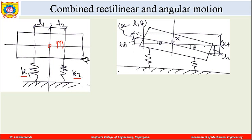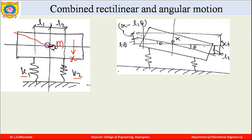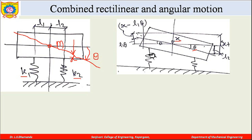When some force acts on the block, it gets displaced — it rotates in a clockwise direction and at the same time moves downward, so the linear motion is in the downward direction, denoted as x. It also rotates about this particular axis by an angle theta. So this block will move downward by some distance x and also rotate about this axis by angle theta.